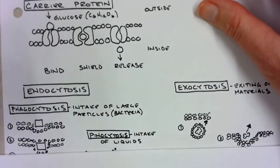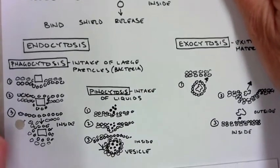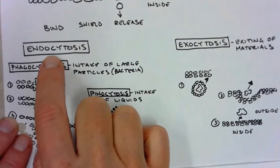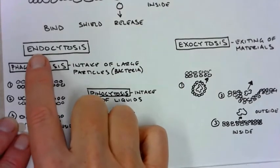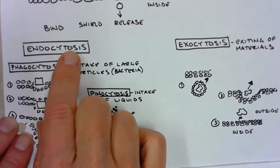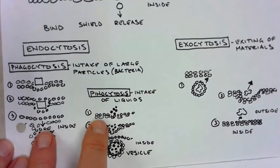Two other types that we need to go over. This looks fairly complicated, but it's not as bad as it seems. Endo, if you take N in Spanish, N means in. Cytosis basically means inside. Cyto means cell. So we move materials into the cell. And that's accomplished basically two different ways.